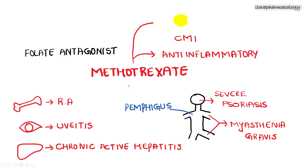Next, methotrexate. Methotrexate is a folate antagonist and has two activities: it will inhibit the cell-mediated immune responses, and in addition it also has anti-inflammatory action. Methotrexate can be utilized in the treatment of autoimmune disorders like refractory rheumatoid arthritis, chronic uveitis, chronic active hepatitis. It can also be used in the treatment of pemphigus, severe psoriasis, and myasthenia gravis.